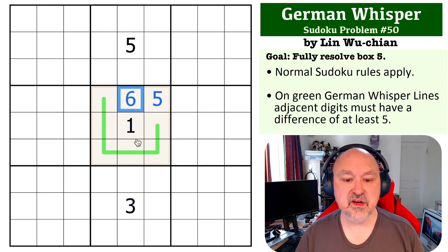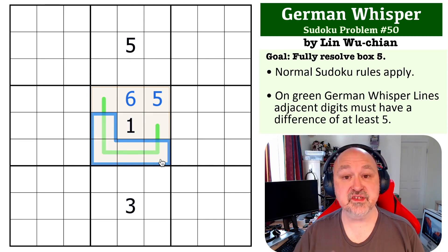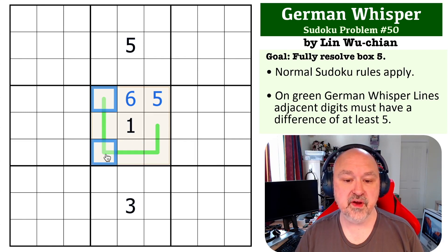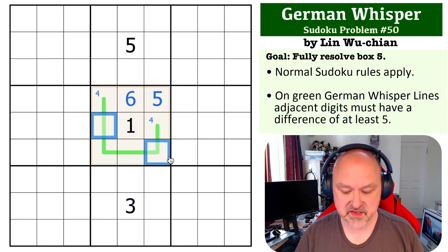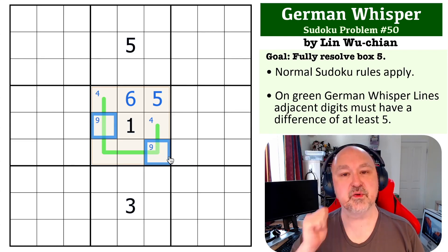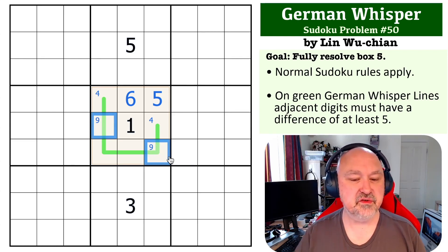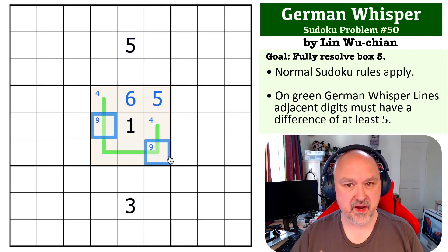Now, four can never go in the middle of a line because there's only one digit that can go next to a four, which is nine. So if we put four here, these would both be nine. So four must go at the end of the line, and nine must go next to it. Whoops, that's not what I meant to do. That's what I meant to do. So, but what we need to do now is we need to figure out which way it goes.